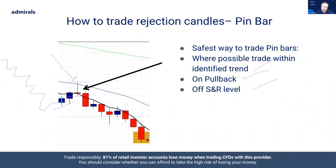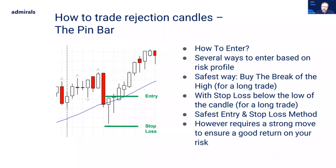So if you've identified a pin bar, you want to know how to enter. There are several ways, and some are based upon your experience and risk profile. The safest way, once you've identified one, is to buy the break of the high of the candle if it's a long trade, or sell the break of the low on a short trade. You can see price was in an uptrend, pulled back to the 20-period moving average — the blue moving average on this chart — and printed a very nice pin bar. So we'd be looking to have an order in just above the high of that candle, normally two to five pips above, depending upon the time frame you're trading.